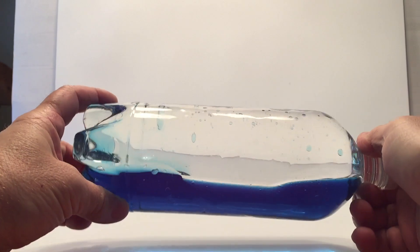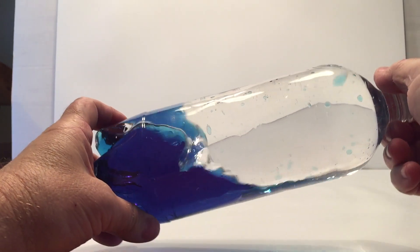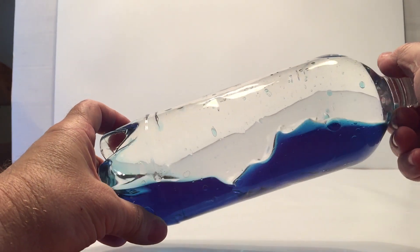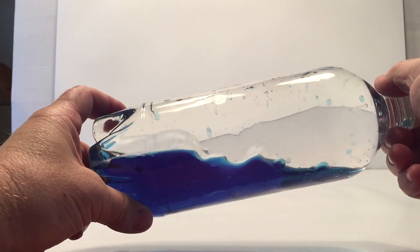Now switch the bottle back and forth side to side. And look what's happening. There's a wave in the bottle. The waves are bigger at one end of the bottle and smaller than the other.